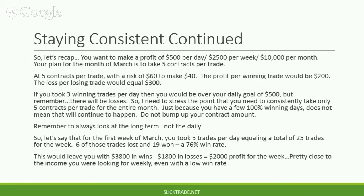Just because you have a few 100% winning days, or maybe a 100% winning week or entire month, it does not mean this is going to continue to happen. Do not bump up your contract amount simply because you've been winning for a period of time or you feel it's going to win. Remember to always look at the long term, not the daily. Let's say that for the first week of March, you took five trades per day, equaling a total of 25 trades for the week. Six of those trades lost and 19 won — that's a 76% win rate, which is quite low. But this would still leave you with $3,800 in wins, $1,800 in losses, with a total of $2,000 profit for the week — pretty close to the income you were looking for weekly, even with a low win rate.